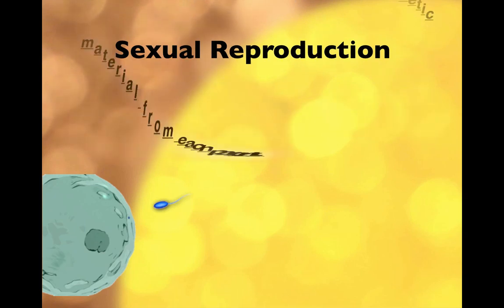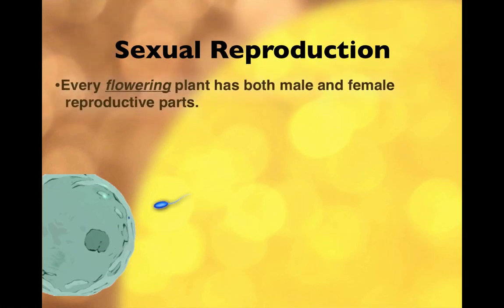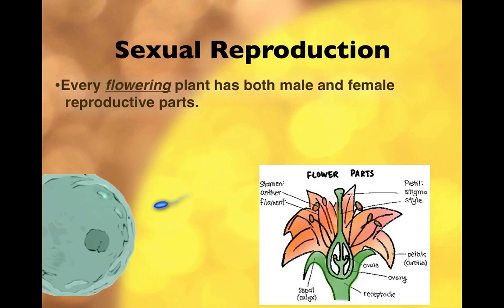With plants, it's a similar situation. You've got male and female gametes that come together. In the case of animals, the female gamete is the ovum and the male gamete is the sperm. Every flowering plant has both male and female reproductive parts. Looking at this diagram, the pistil is the female reproductive organ for a flower. At the bottom of the pistil is the ovule, where the egg is formed. The stamen — which consists of the anther and the filament, the stem that holds up the anther — produces the male gamete, which we think of as pollen.